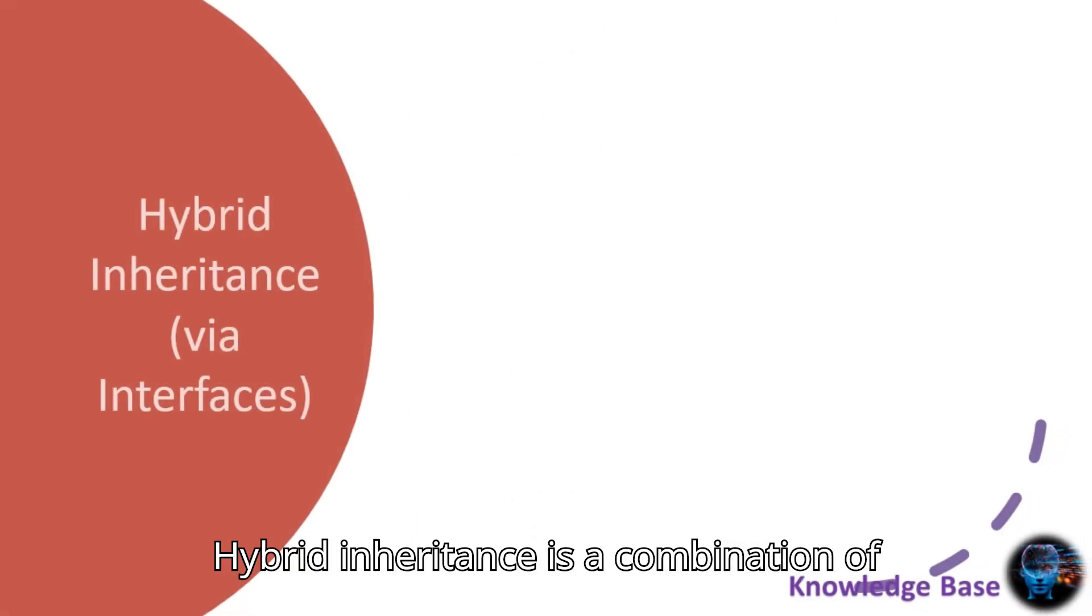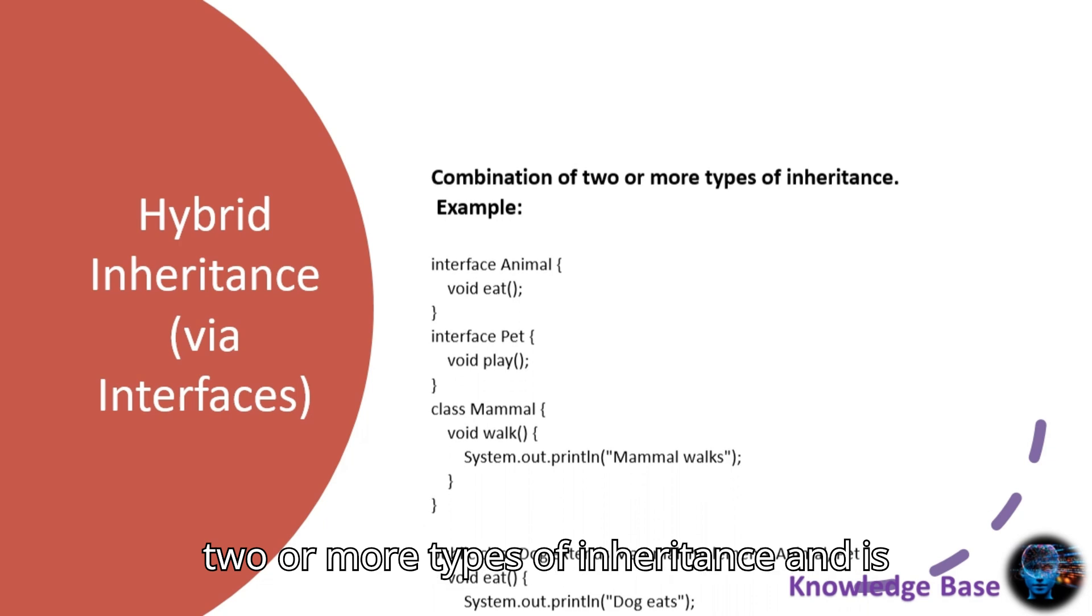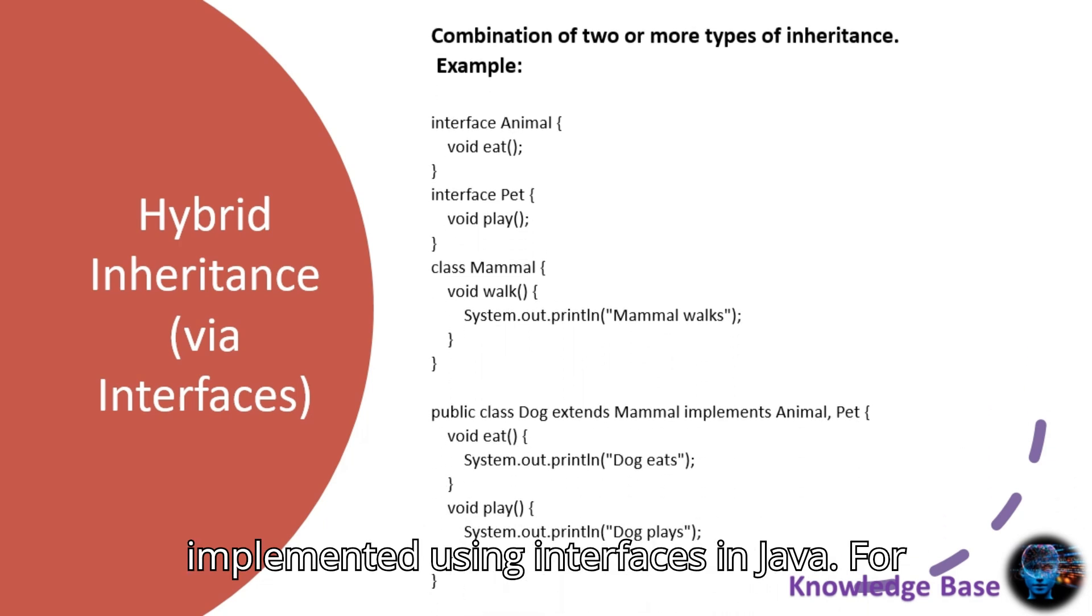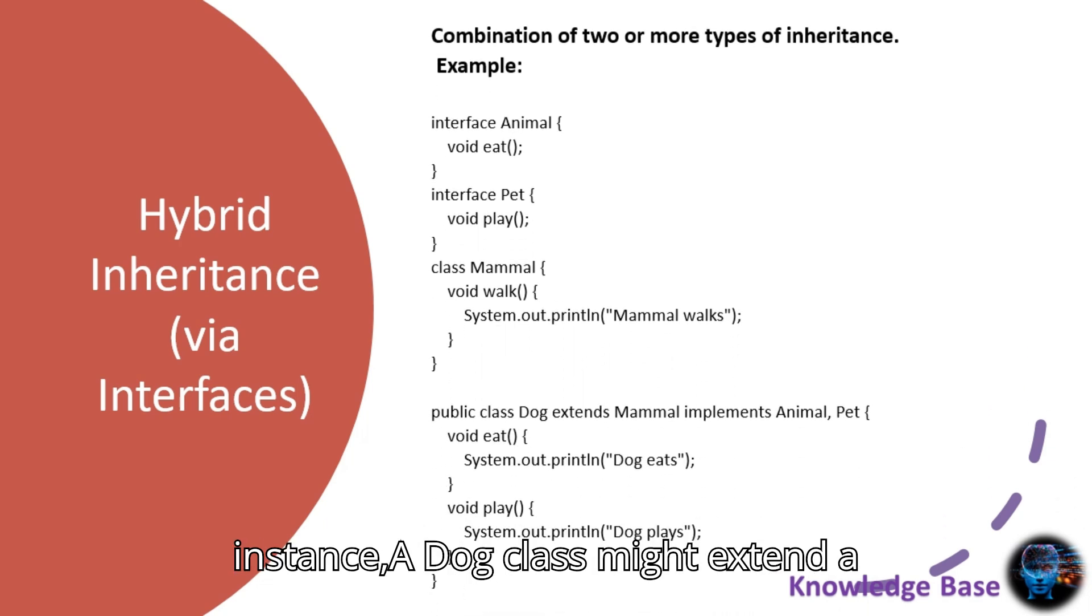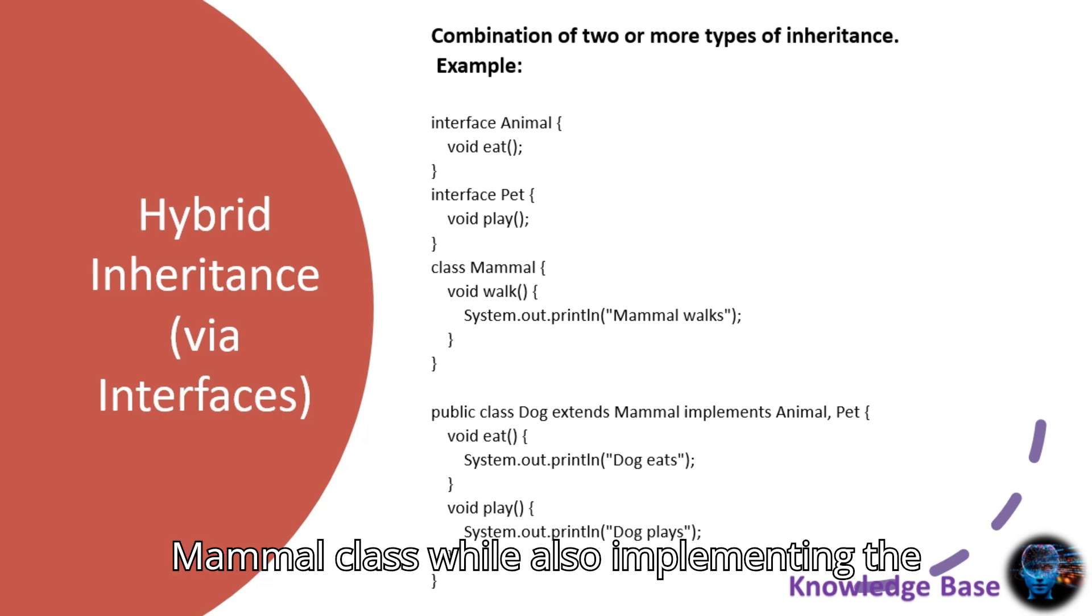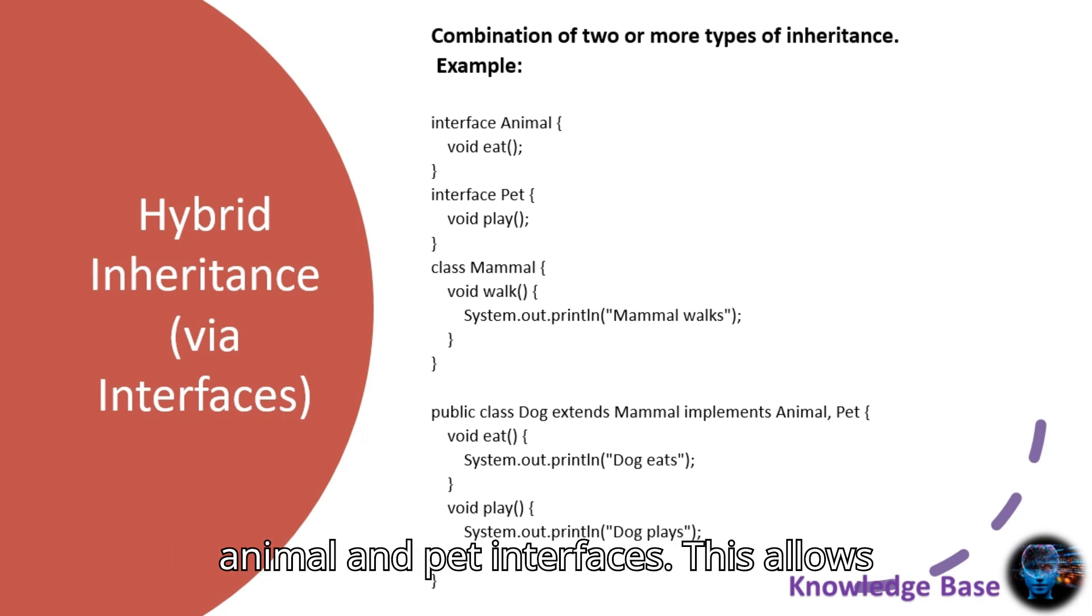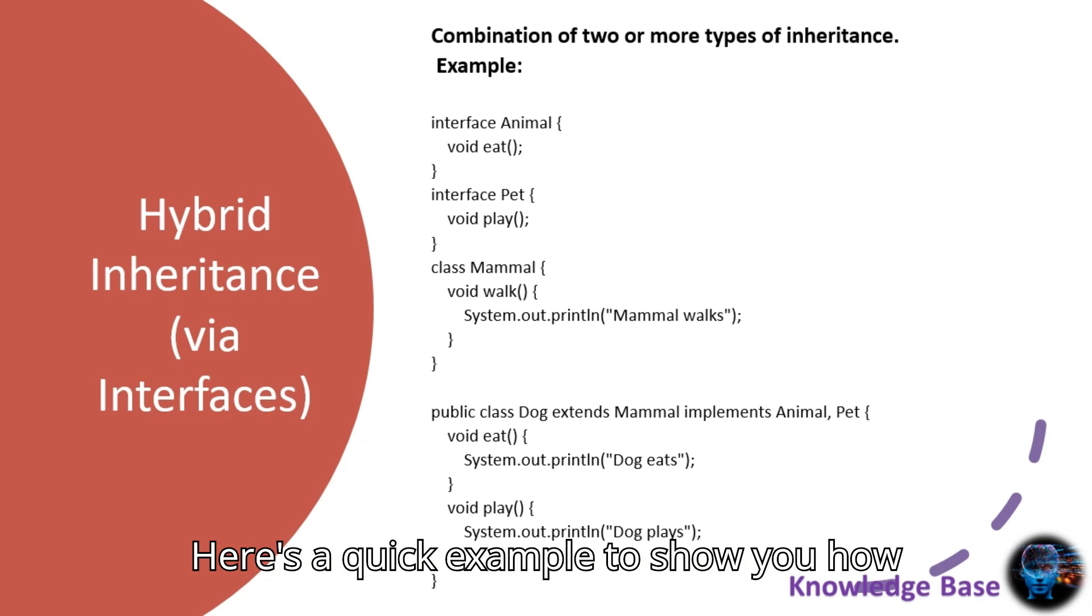Hybrid inheritance is a combination of two or more types of inheritance and is implemented using interfaces in Java. For instance, a dog class might extend a mammal class while also implementing the animal and pet interfaces. This allows you to combine the benefits of single, multilevel, and multiple inheritance. Here's a quick example to show you how this works.